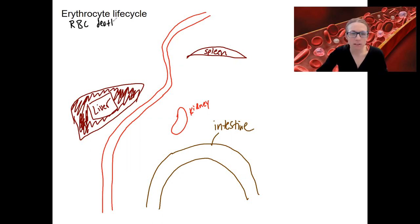So red blood cells last about 120 days, much shorter lifespan than a lot of your cells. And what happens to them when they are done?